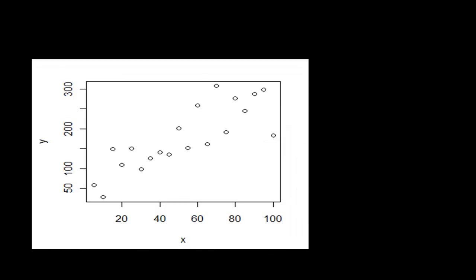Now we are moving on to another topic. You have a bunch of data with attributes x and y — for example, height and weight, or price and profit. When you have two dimensions, it is possible to plot them on a two-dimensional graph.